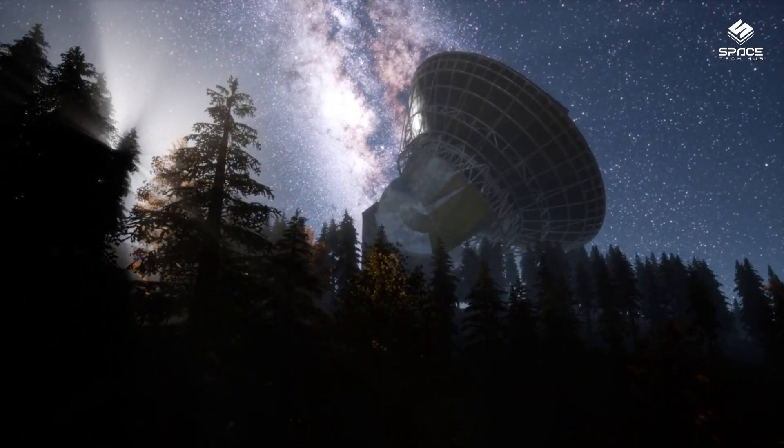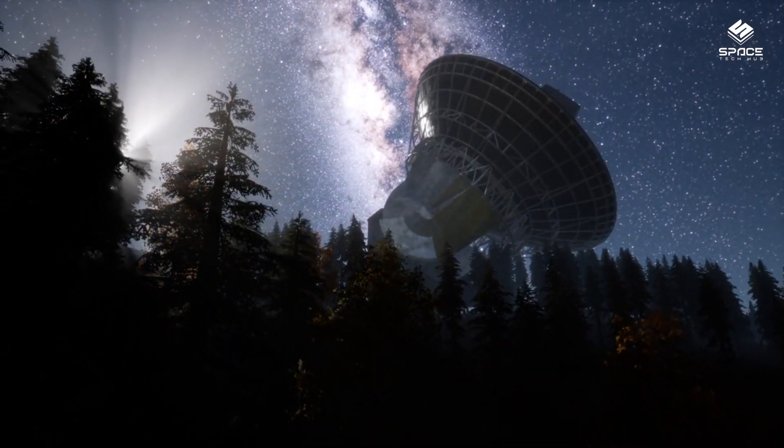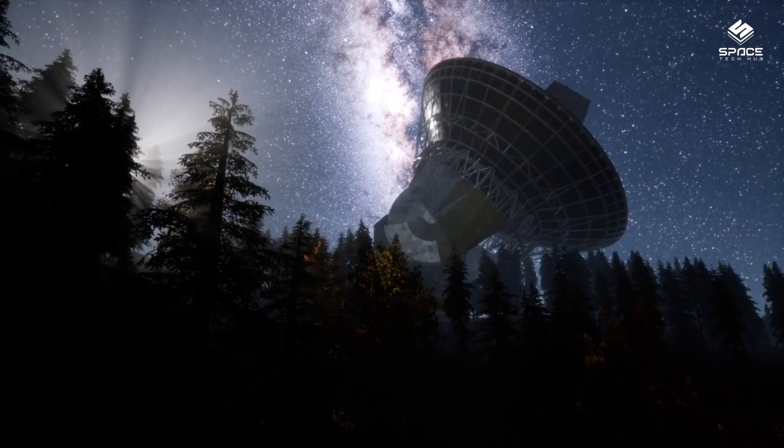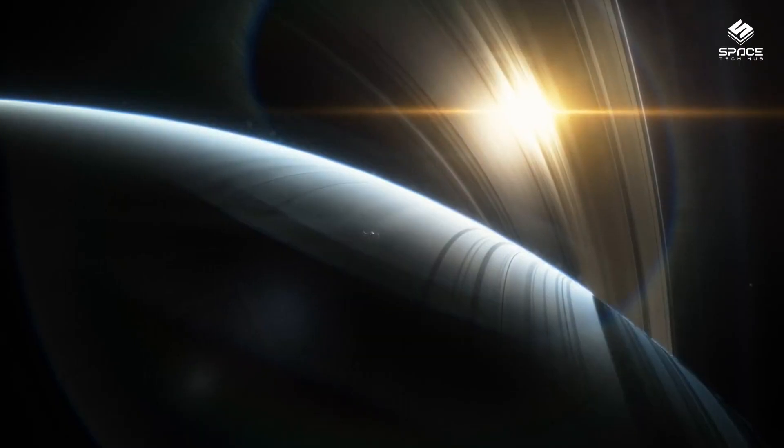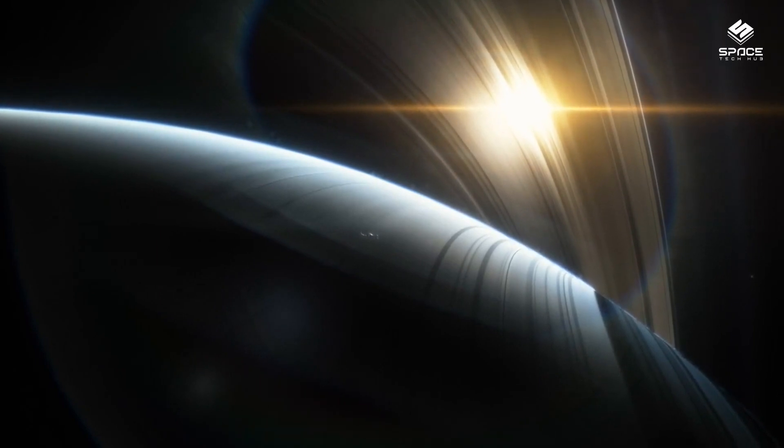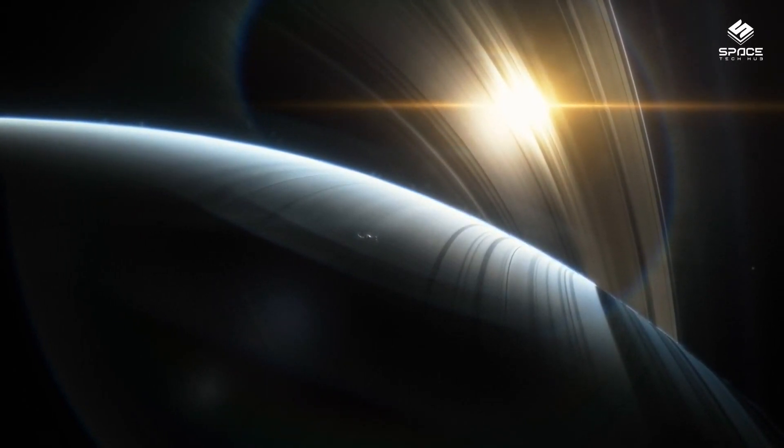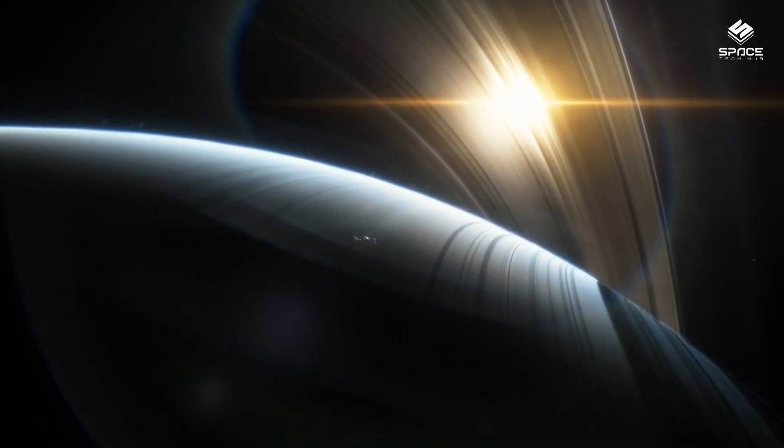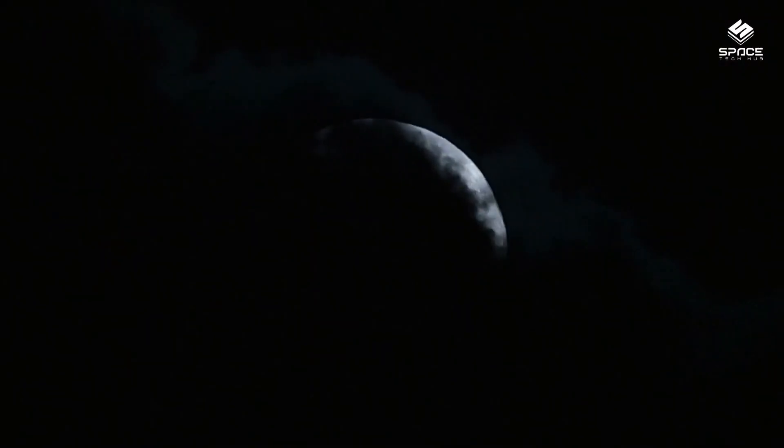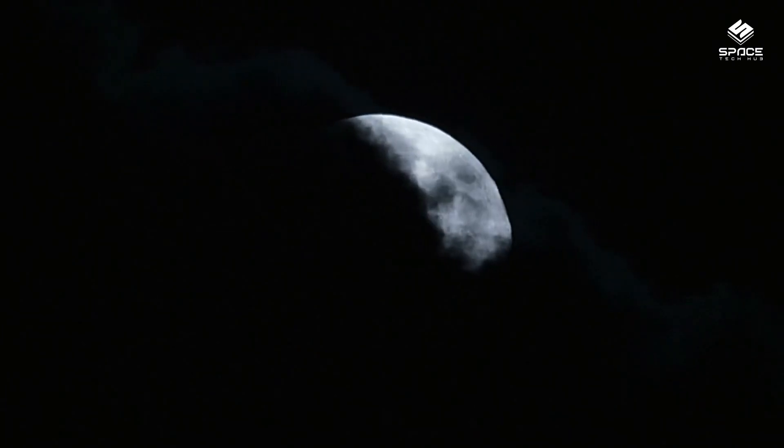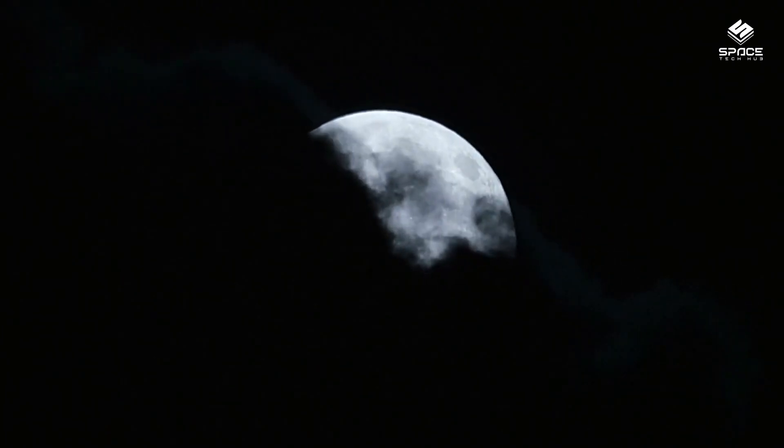But sometimes, by chance, some of the planets do line up in a way that we can see them together in the night sky. And that's exactly what's happening right now. From June 18 to June 23, you can see five planets: Mercury, Venus, Mars, Jupiter and Saturn, forming a beautiful arc across the sky. They will be joined by the crescent moon on June 19 and 20, making it even more stunning.